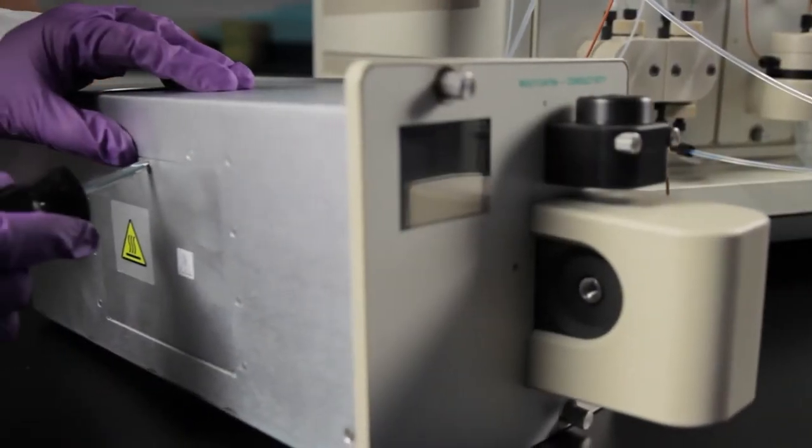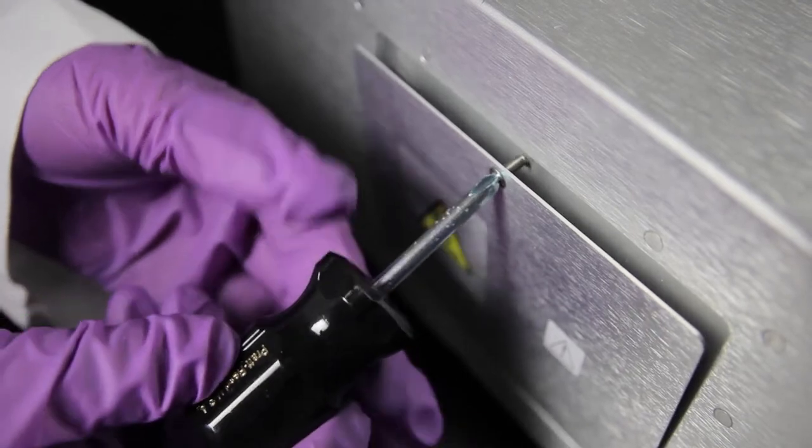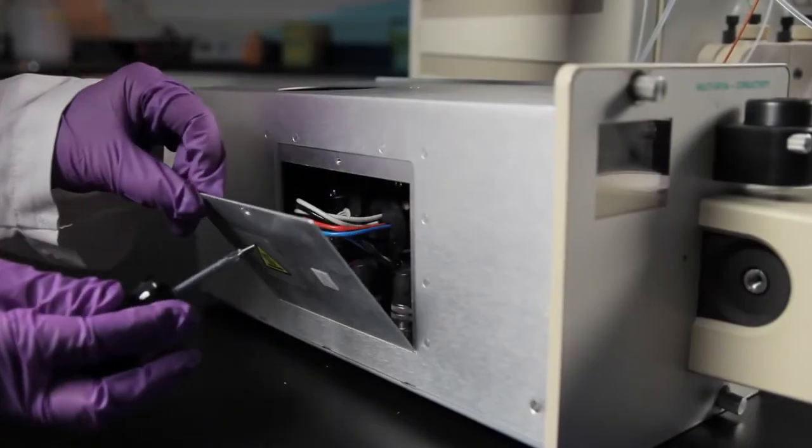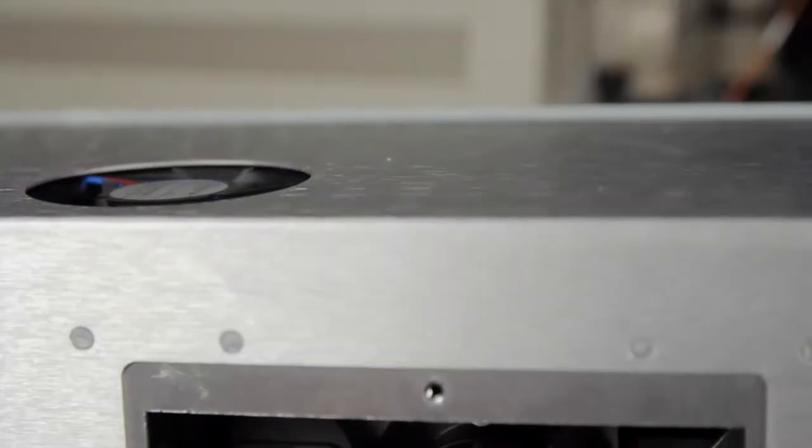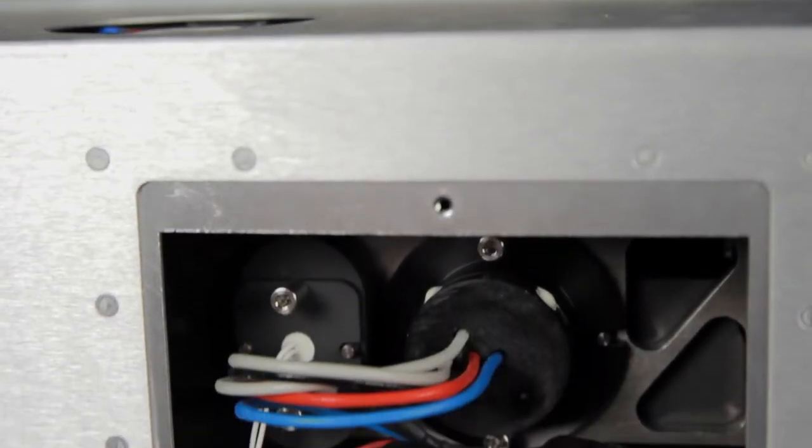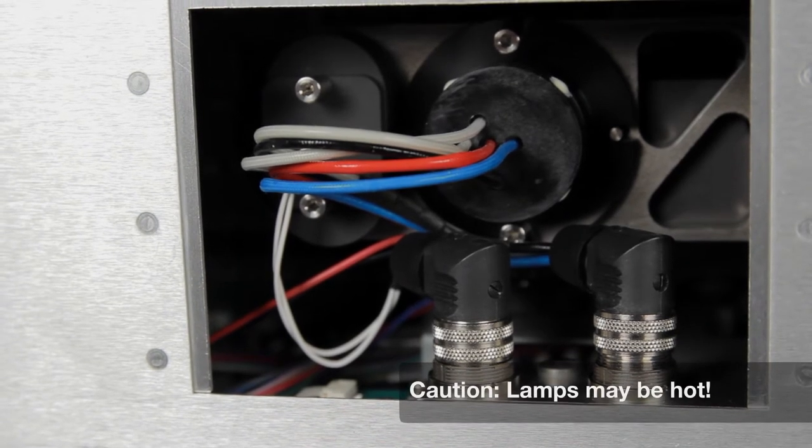Now locate the door on the left side of the multi-wavelength detector module. Using a Phillips screwdriver, loosen the door screw and remove the door. You will now be able to access both of the lamps. The lamps may be hot, so use caution when removing them.